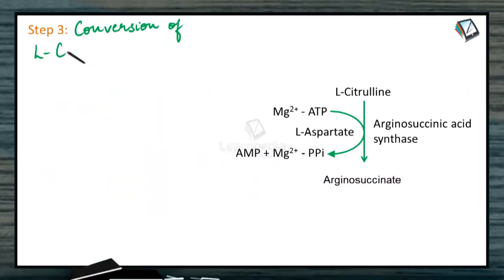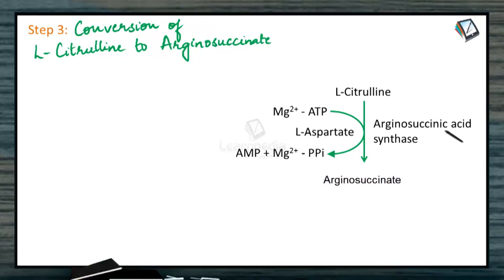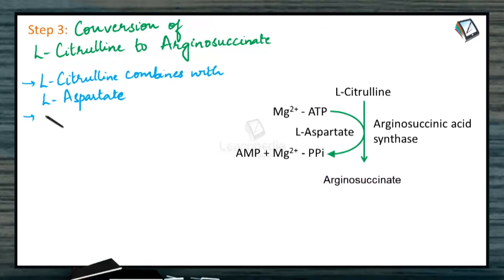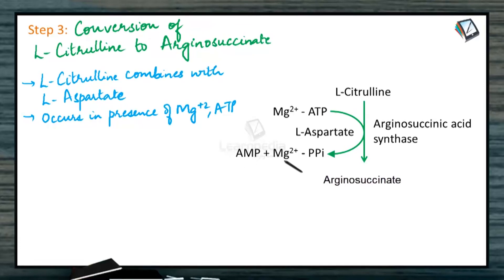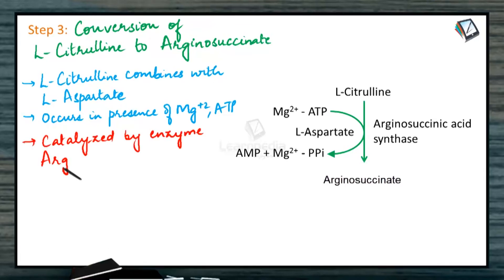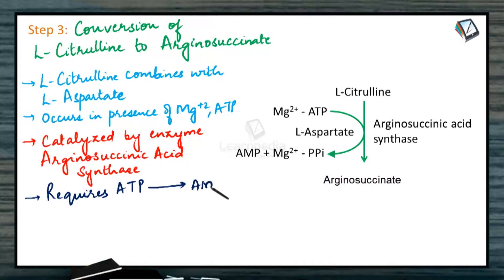Step 3: Conversion of L-citrulline to arginosuccinate. L-citrulline combines with L-aspartate in the presence of the enzyme arginosuccinic acid synthase to form arginosuccinate. This reaction occurs in the presence of magnesium ions and ATP. The magnesium ions and ATP are converted into AMP and Mg²⁺ pyrophosphate, catalyzed by the enzyme arginosuccinate synthase.